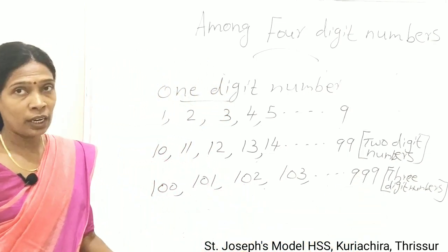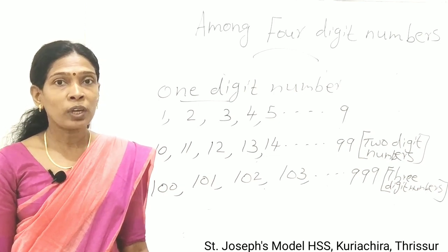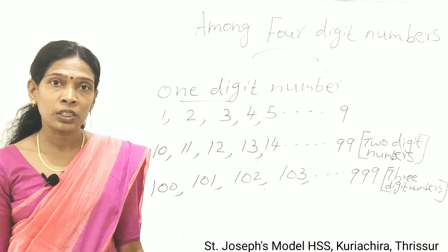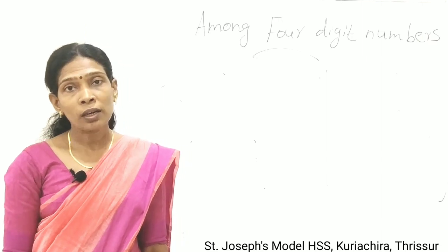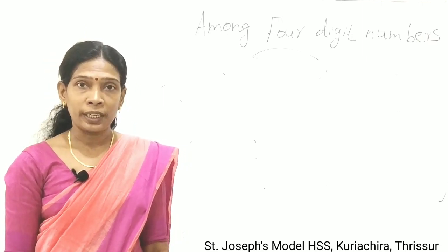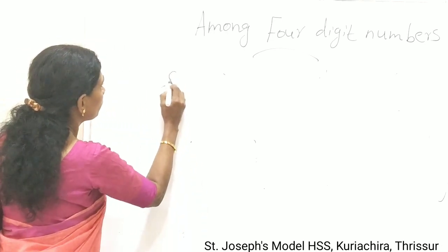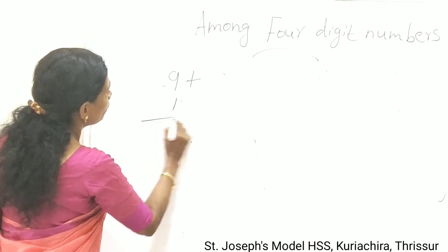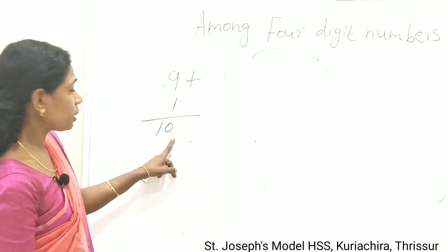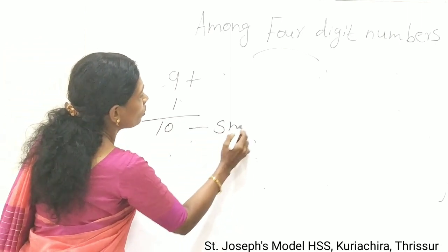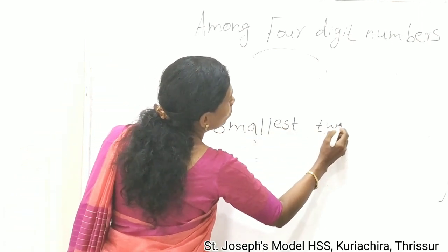All these things you studied earlier. Now, how do we get 2 digit and 3 digit numbers? When we add 1 to the largest 1 digit number, we get the smallest 2 digit number. So 9 + 1 = 10, and 10 is the smallest 2 digit number.